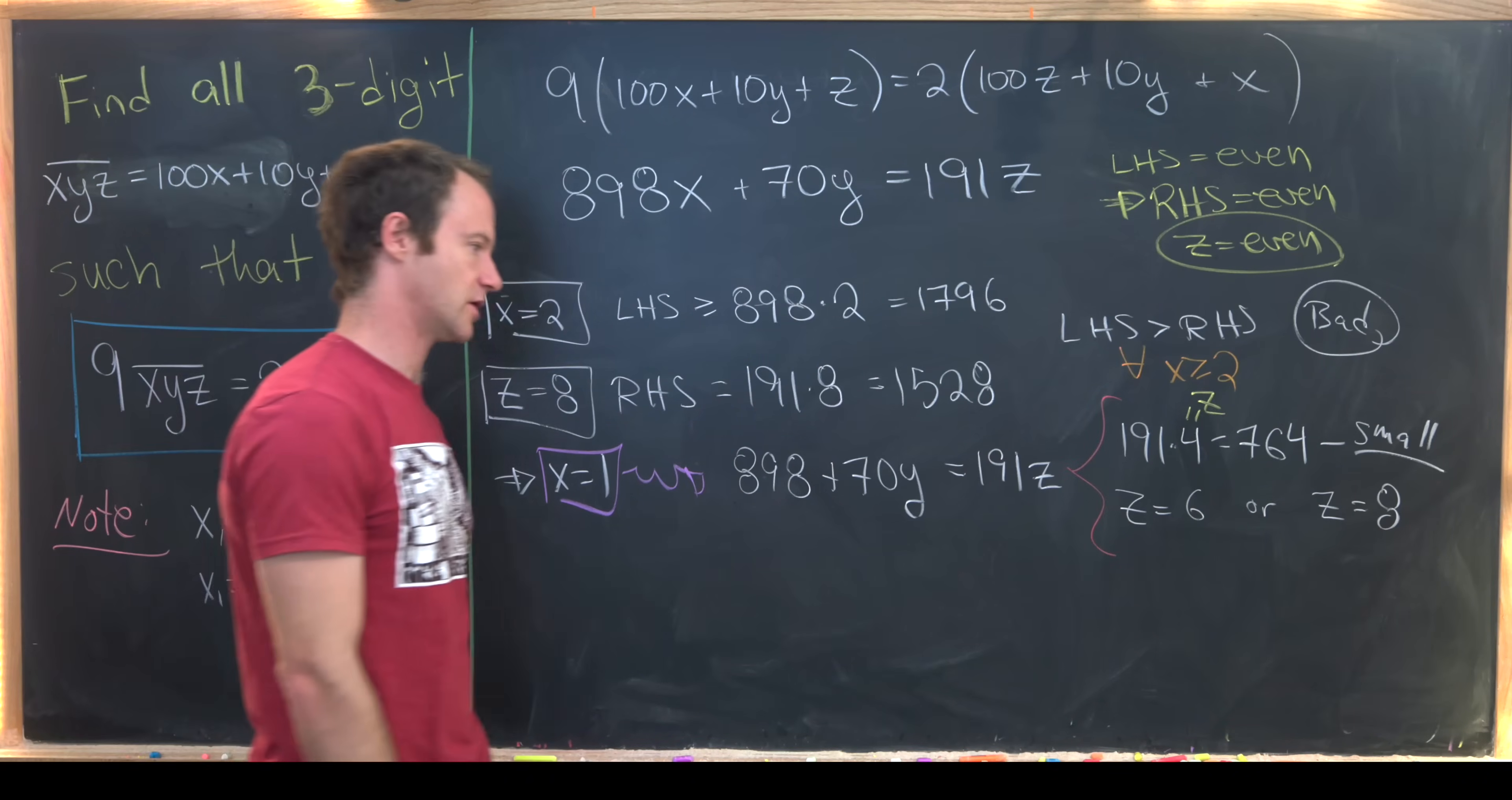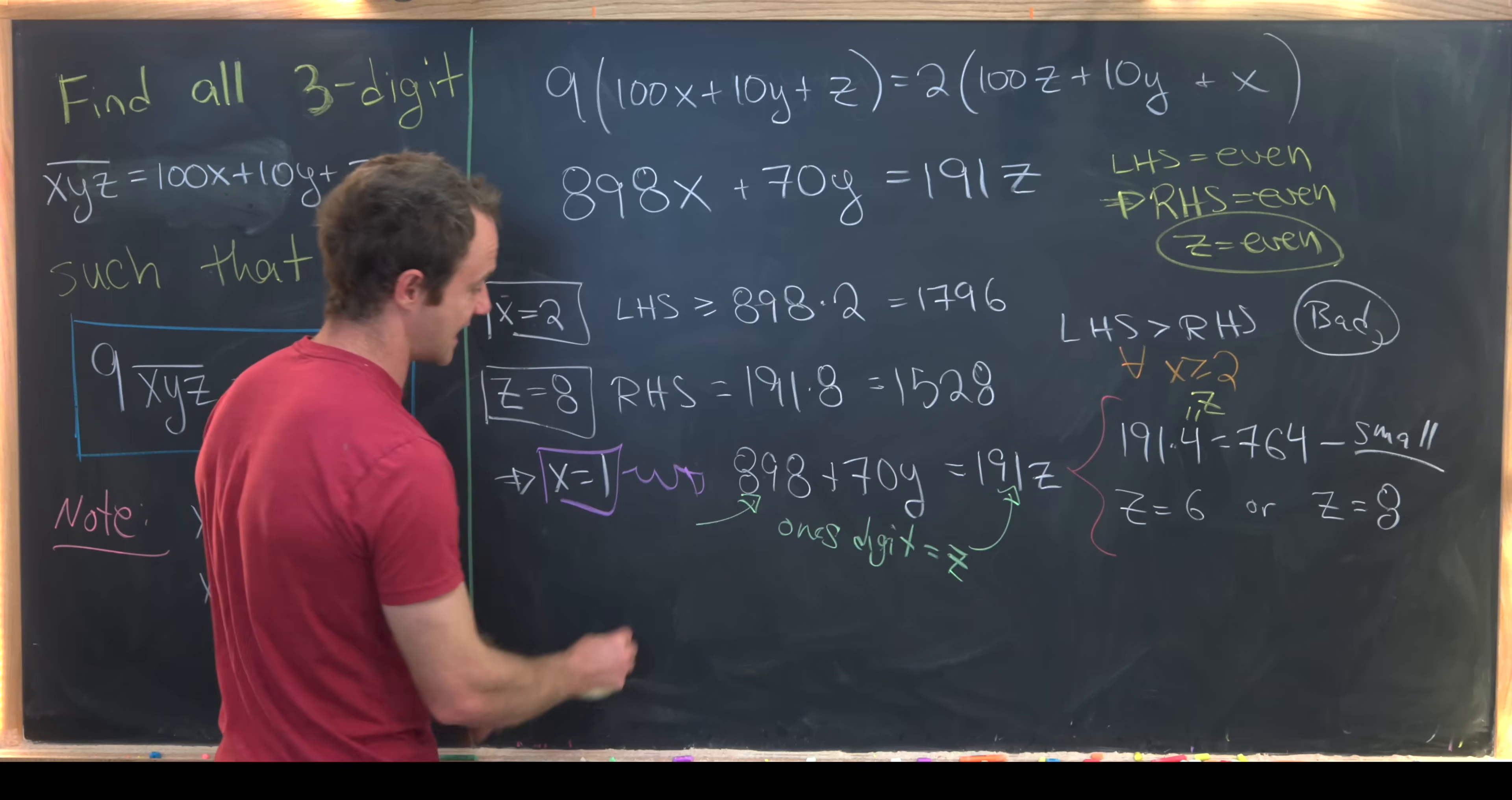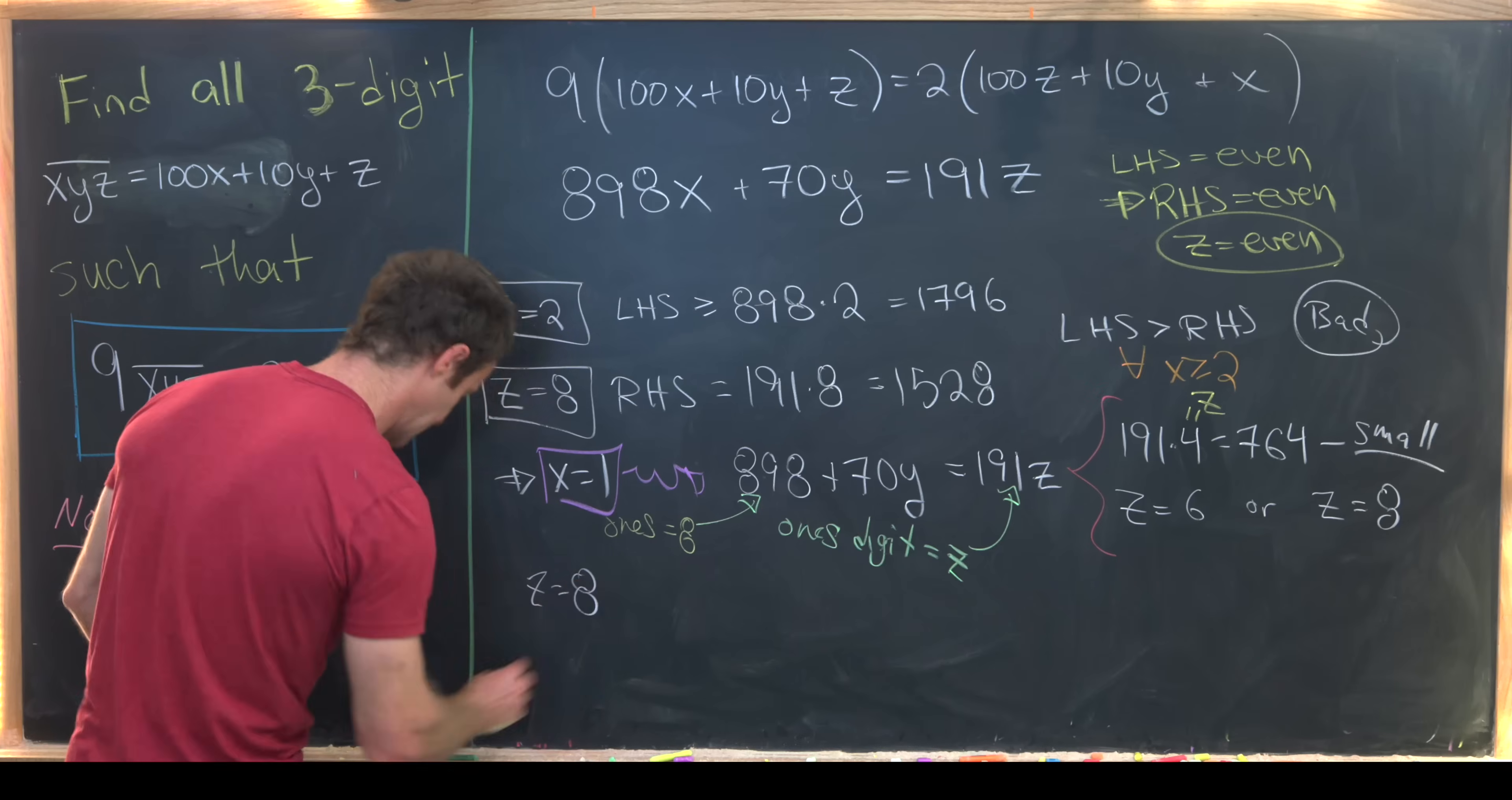Now we can make a bit of a shortcut argument. Notice that the ones digit of 191z is equal to z. That's because we're multiplying by 191. Whereas the ones digit of the left hand side is obviously equal to 8. Well that's because 70y has 0 for the ones digit so we get this 8. Well what does that tell us? Immediately we know that z must be equal to 8.